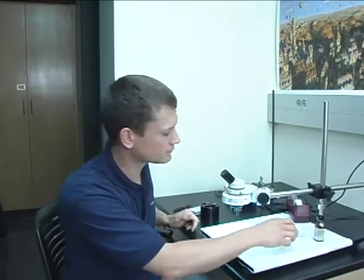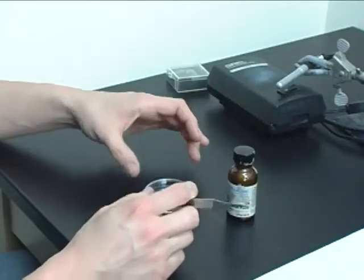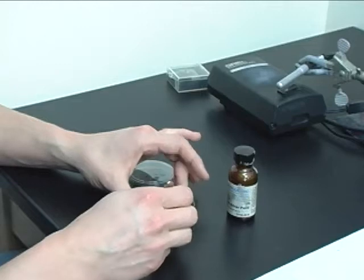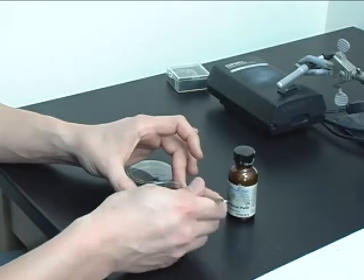So the first thing that we're going to do is we're going to prepare our sample. Our sample in this case is indium tin oxide, which is a conducting transparent metal oxide.